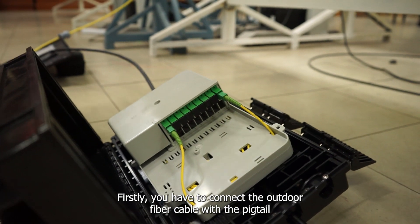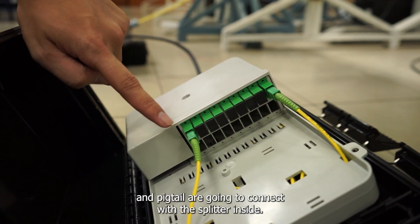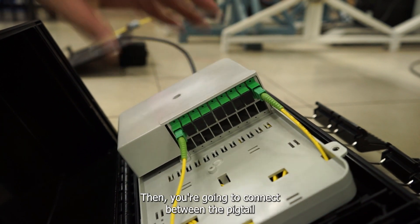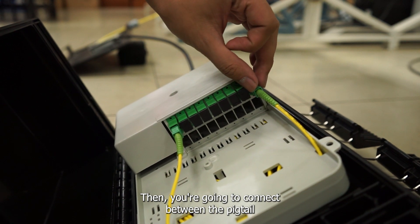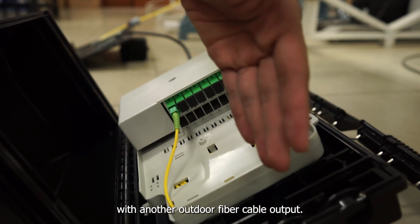First, connect the outdoor fiber cable with the pigtail. The pigtail connects to the splitter inside. Then, connect the pigtail with another outdoor fiber cable output.